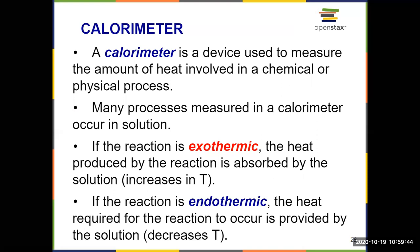The calorimeter is the device used to measure the amount of heat transfer involved in a chemical or physical process. Typically this is happening in an aqueous solution, so we're just measuring the temperature change of water. If the reaction is exothermic, the heat produced by the reaction is absorbed by that solution, so we see an increase in temperature of the calorimeter. Flip those around if the reaction is endothermic — the heat required is provided by the calorimeter, so we see a decrease in temperature and the solution cools.